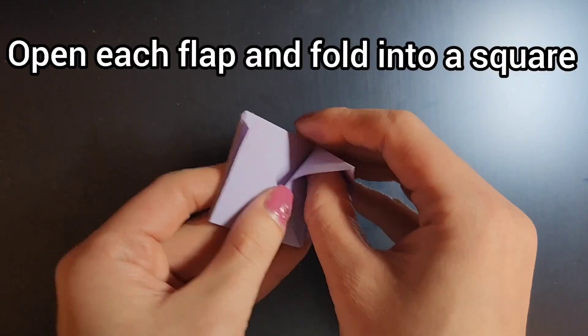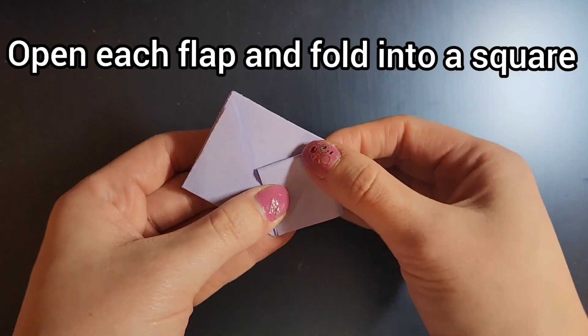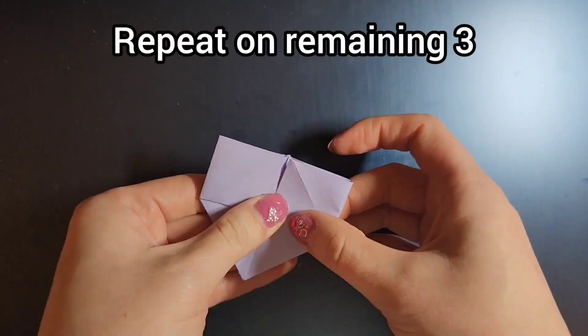Next open each flap and fold it into a square. Again, repeat this on the remaining three.